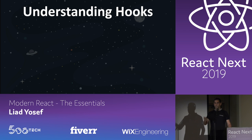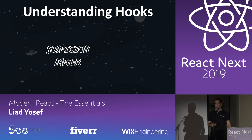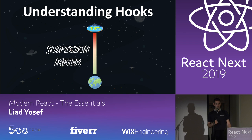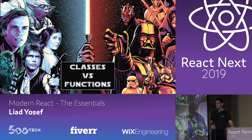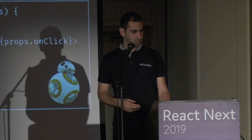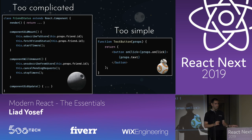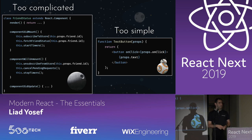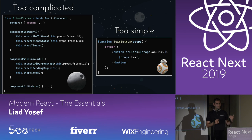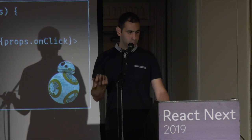Why hooks? Everything began with the classes versus functions debate. Classes in React are too complicated — 'this' is confusing for humans and machines. You have to wrap different logic in the same lifecycle methods: componentDidMount subscribes to events, componentWillUnmount unsubscribes — grouped by lifecycle, not by logic. On the other hand, functions were too simple: pure functions can't use state or trigger re-renders. We were looking for a solution in the wrong places.